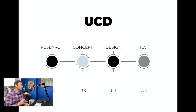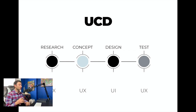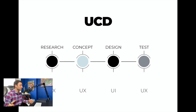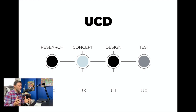On the screen now is the UCD — the User-Centered Design process — and this is how you create any digital product. It's a format for how you design something. There are four different stages: research, concept design, detailed design, and test. UI is part of the UX design process. UI stands for user interface and UX stands for user experience. UI is a very specific visual design field.